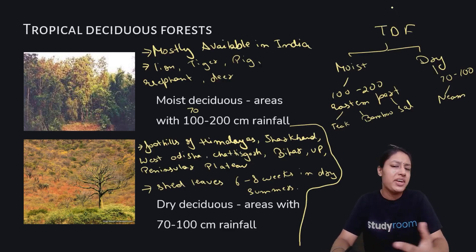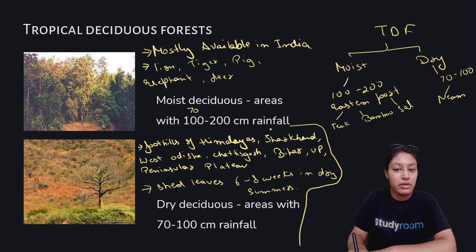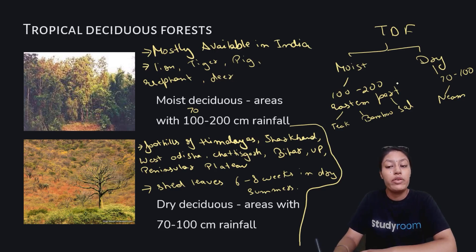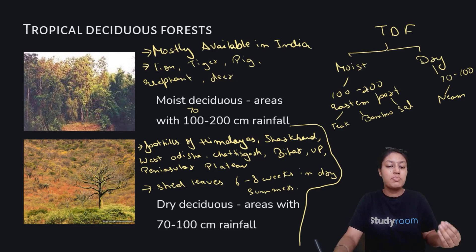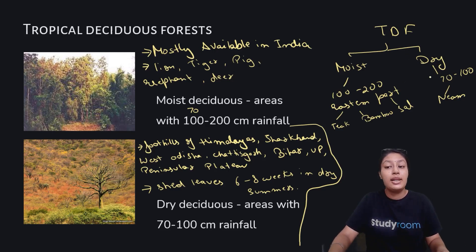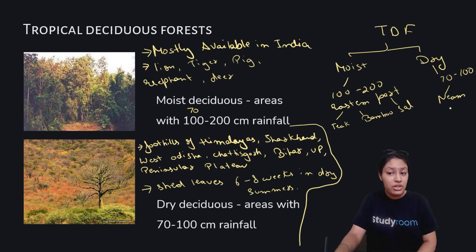Our next type of vegetation is tropical deciduous forest. Tropical deciduous forests are majorly found in areas which have 70 to 200 centimeters of rainfall. We further divide them into two parts: moist deciduous forests, which have 100 to 200 centimeters of rainfall and are mostly found in eastern parts — foothills of Himalayas, Jharkhand, West Bengal, Chhattisgarh — with trees like teak, bamboo, sal, and blueberry. Dry deciduous forests have 70 to 100 centimeters of rainfall and we find neem, teak, and sal there.